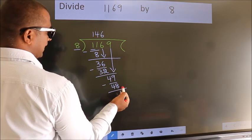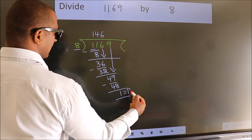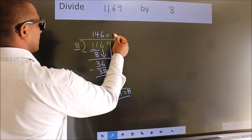No more numbers to bring down, so we stop here. This is our remainder. This is our quotient.